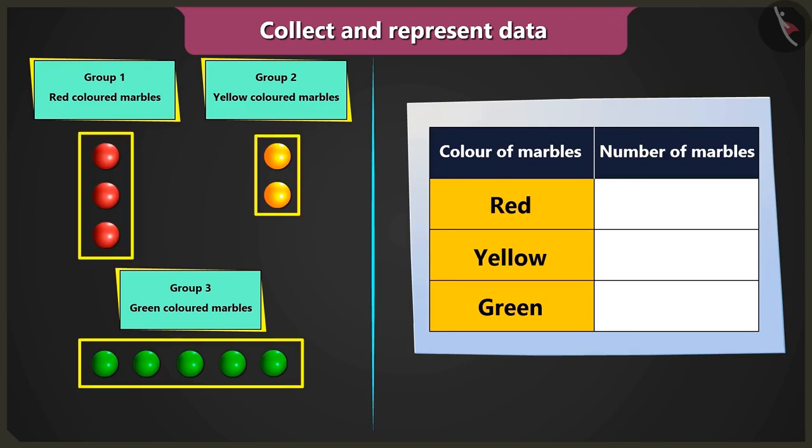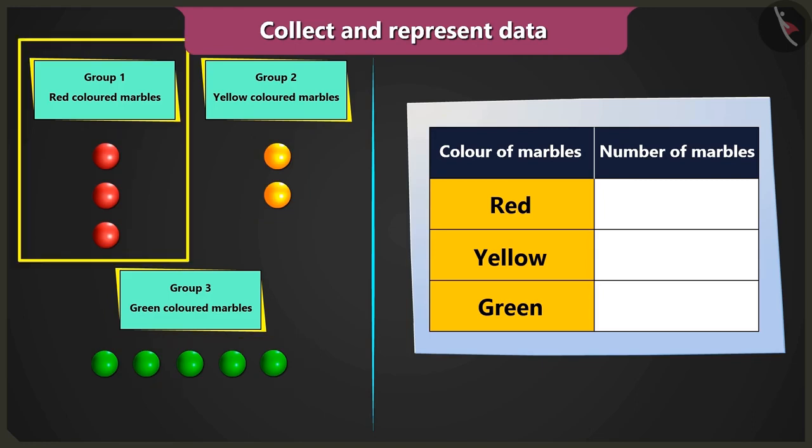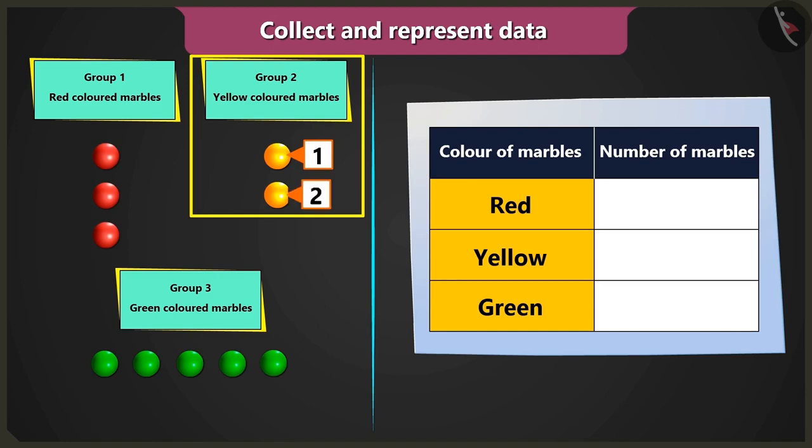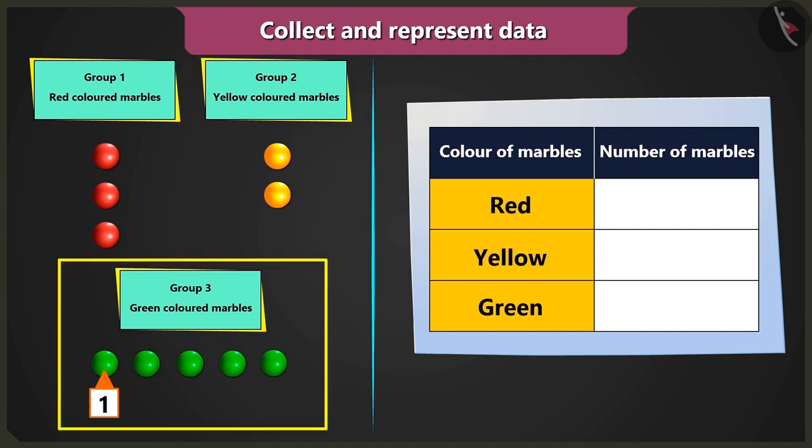What do we have to do next? Now we have to count the number of marbles in each group. There are one, two, and three red marbles in the first group. One and two, two yellow marbles in the second group.